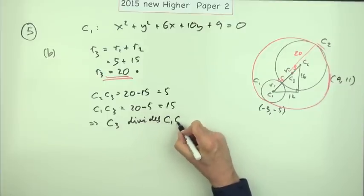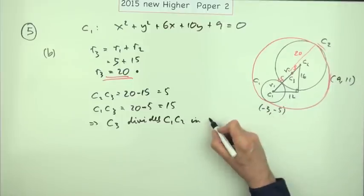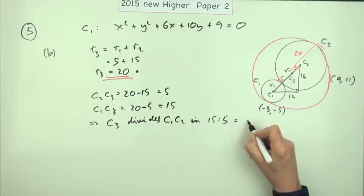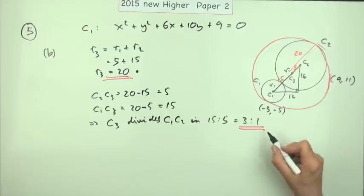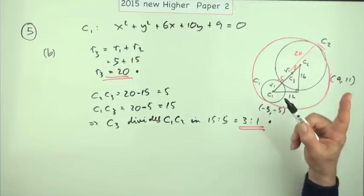...c3 divides c1 c2 in the ratio of 15 to 5 which is 3 to 1. Now arriving at that ratio was a mark.